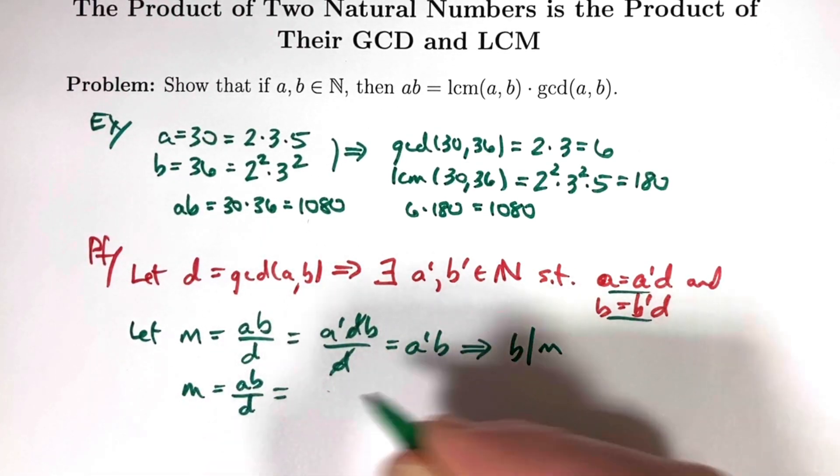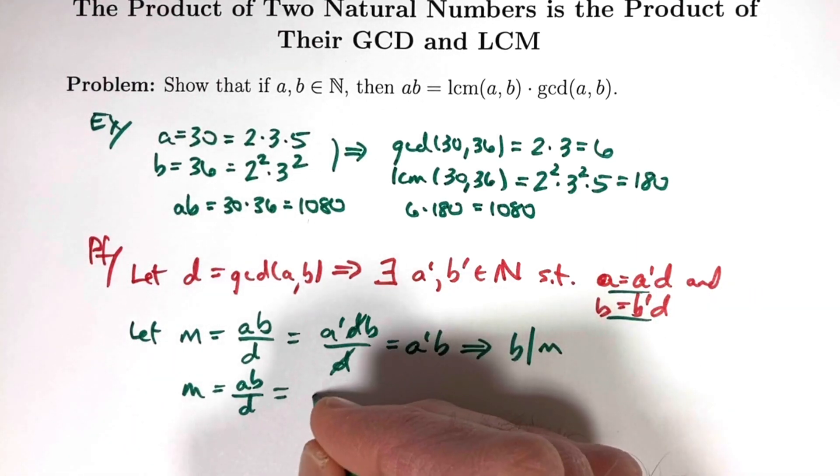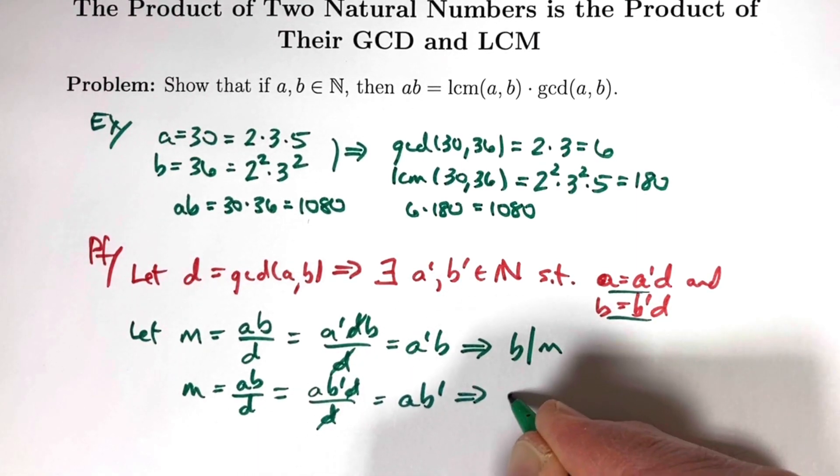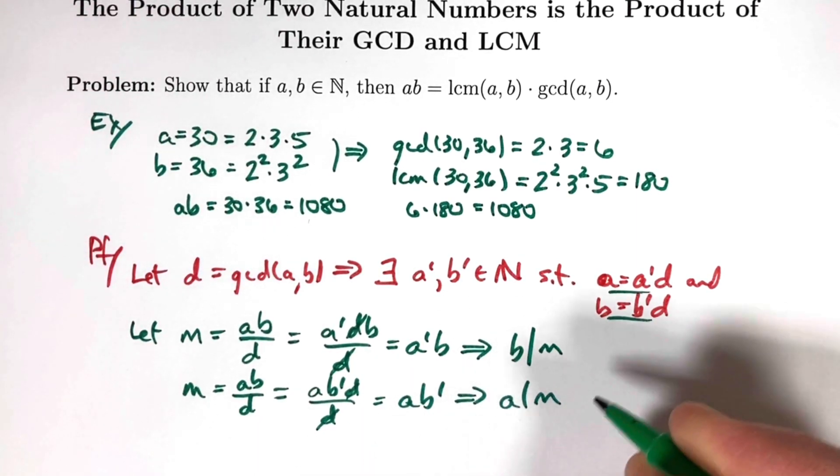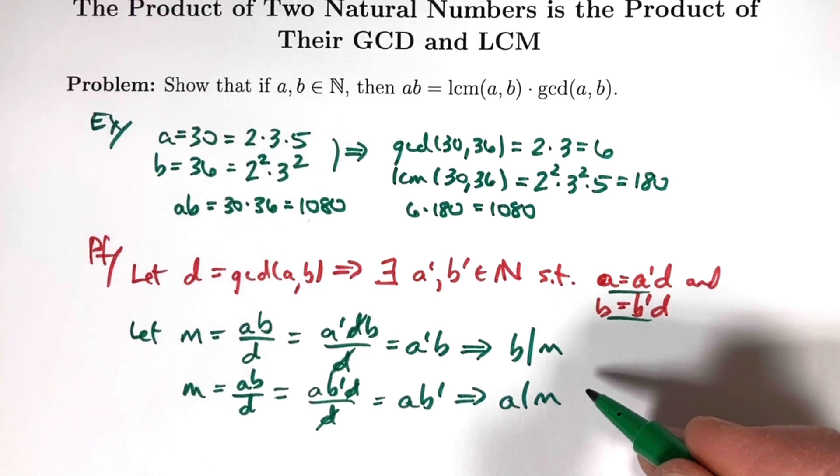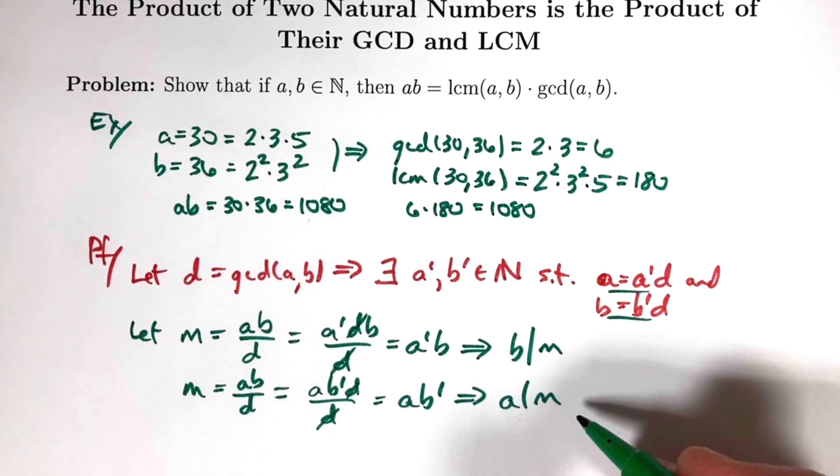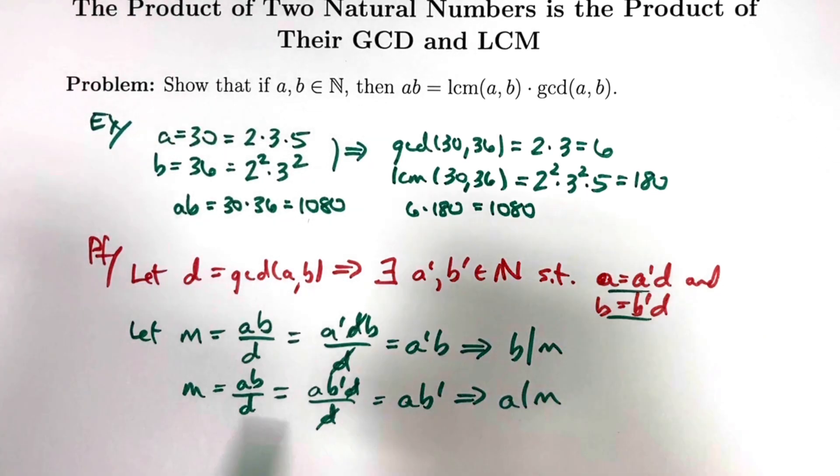I can replace B with B' times D, like this. Once again, cancel the Ds and get A times B'. And that is enough to say A divides M. Therefore, we have shown that M, defined in this way, as AB over D, is indeed a multiple of A and B, an integer multiple. In fact, M is an integer. What's left to show is that it's the least common multiple.